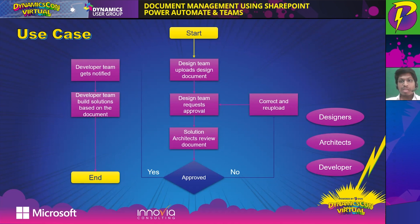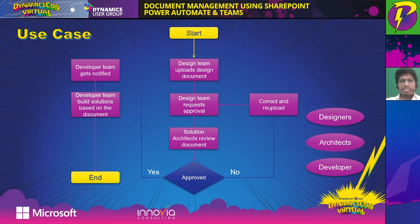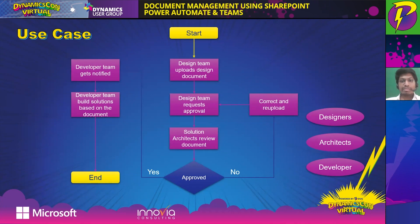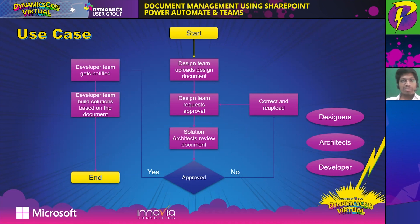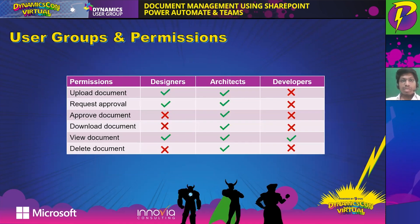Our use case is pretty simple. Consider a service-based company with three sets of users: designers, architects, and developers. Designers take requirements from clients and prepare process flow documents. They submit those documents to the architects, who review them. Once approved, the documents go to the developers, who consume them — meaning they develop solutions based on those documents.